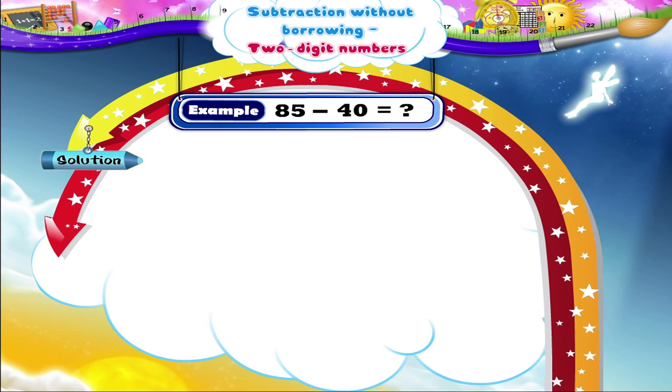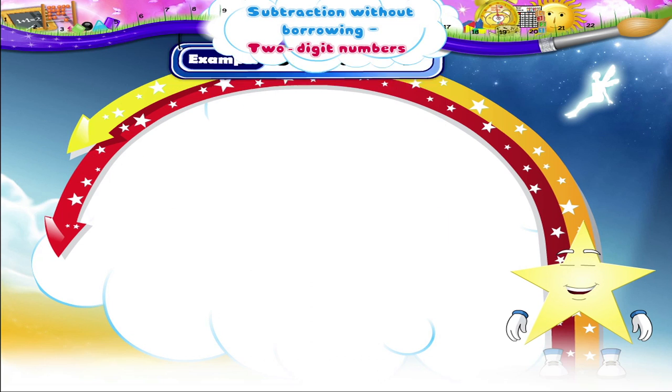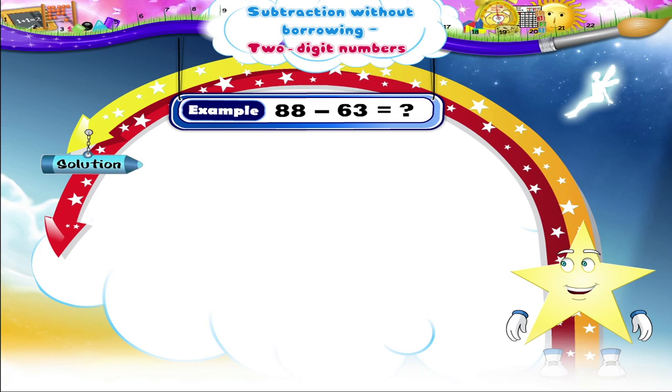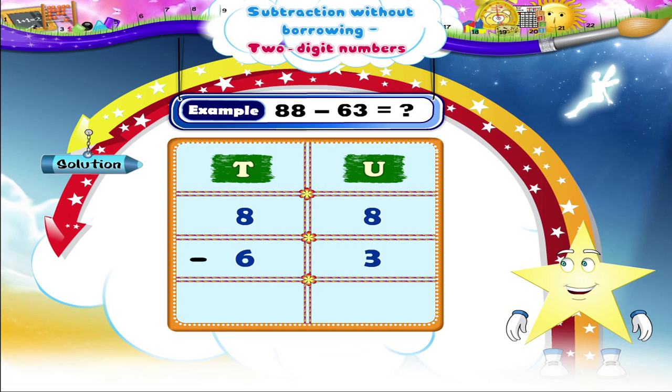The next example is 88 minus 63. See, Starry! The numbers have already been arranged vertically. Now, do the subtraction quickly. Yes, 8 units minus 3 units is equal to 5 units.